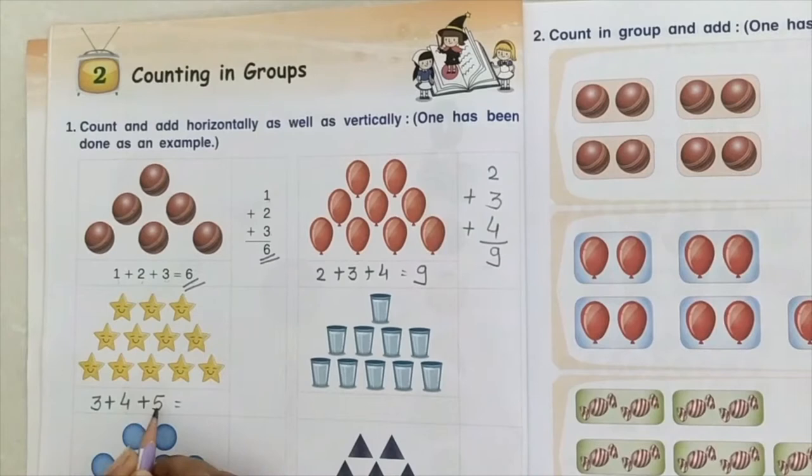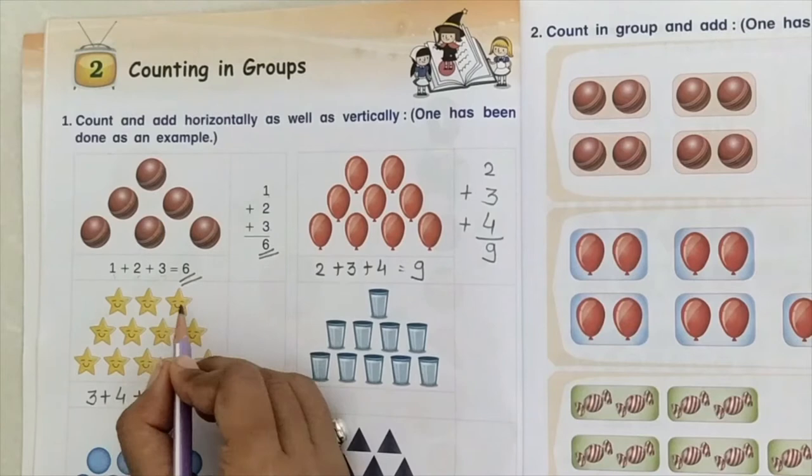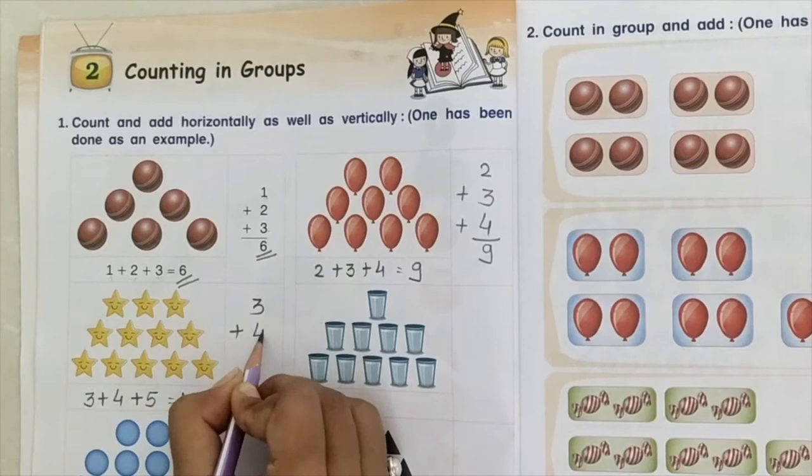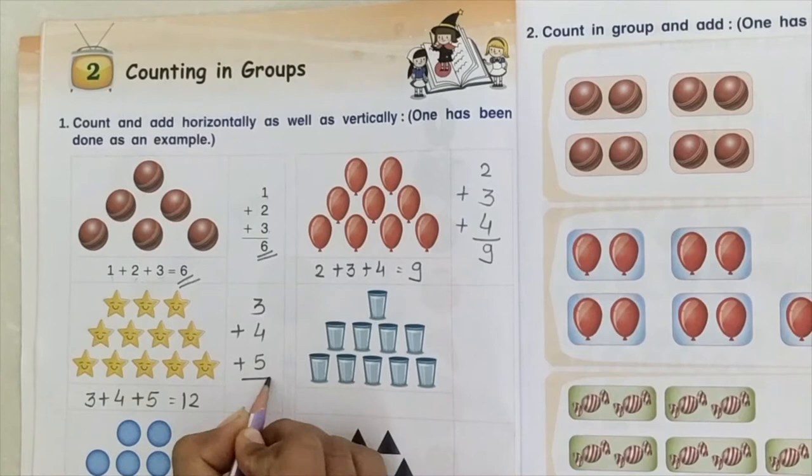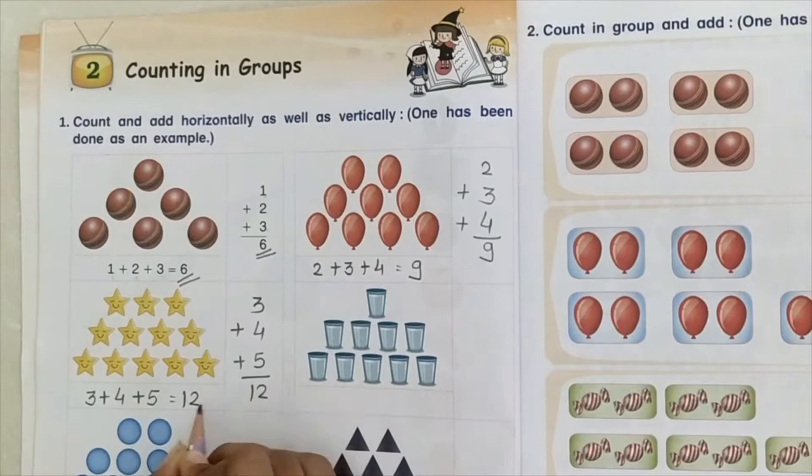Now vertically. One, two, three. Plus one, two, three, four. Plus one, two, three, four, five. Three plus four, seven. Seven plus five, twelve. Answer same.